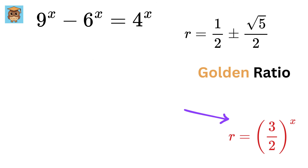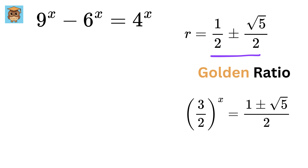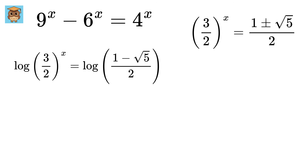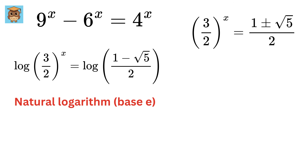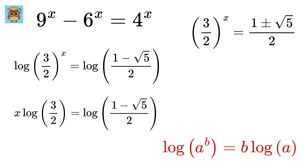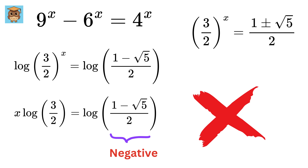Now we can write (3/2) to the x for both values. First, let us solve for the negative one. Take log on both sides — we are calling log as natural log with base e, also referred to as ln. Use this property of logarithms to get x times log of 3/2 equals log of this value. Note that this value is negative, and therefore it cannot directly represent a valid logarithmic argument, as logarithms of negative numbers are undefined in the real number system. So we will discard this equation.